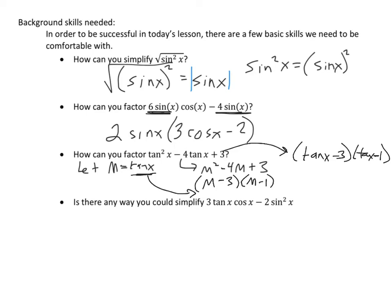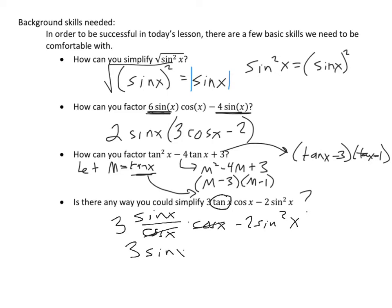The fourth skill: is there any way to use trig identities — like tangent x equals sine x over cosine x, and sine² x plus cosine² x equals 1 — to simplify 3 tangent x cosine x minus 2 sine² x? If we replace tangent x with sine x over cosine x, we get 3 sine x over cosine x times cosine x minus 2 sine² x. The cosine x's cancel, leaving 3 sine x minus 2 sine² x. We can then factor out sine x to get sine x times (3 minus 2 sine x).